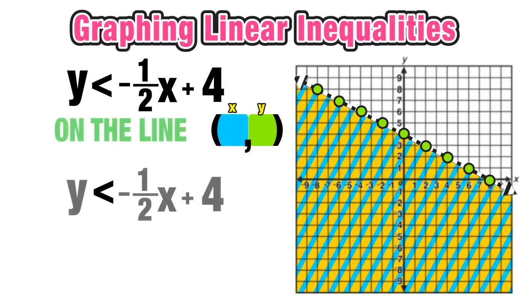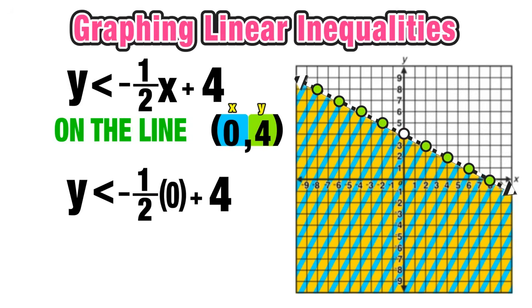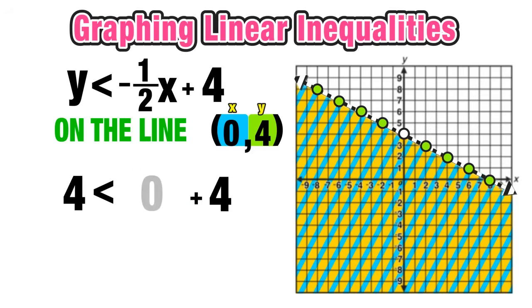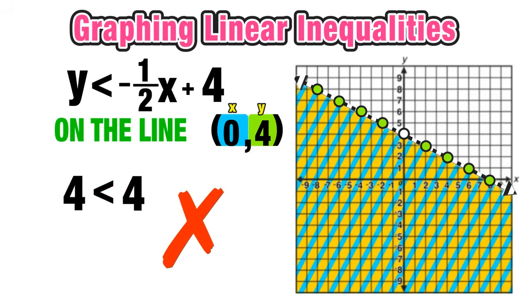Next, a point on the line: (0, 4). Substituting x = 0 and y = 4: negative one-half times 0 is 0, and 0 plus 4 equals 4. We get 4 < 4, which is not true. This confirms that with a dashed line, points on the line are not included in the solution set.